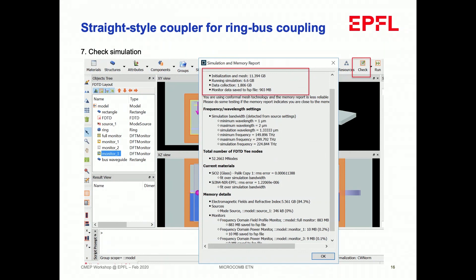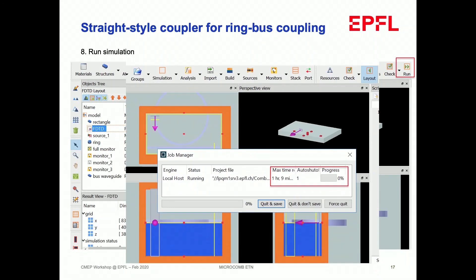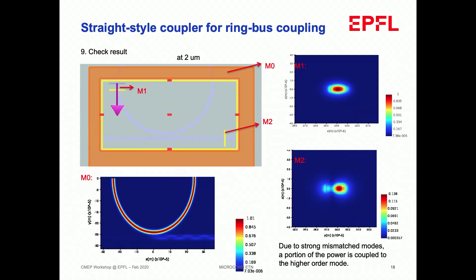There's also a material explorer where you can import material properties, provide a few data points, and fit the entire curve — giving you the real and imaginary parts of the refractive index. Then you check your simulation: this tells you how much memory and disk space you need. When you run with mesh 3, you probably need about one hour. Let me show you what the simulation results look like.